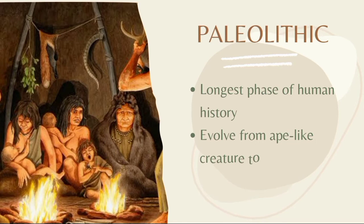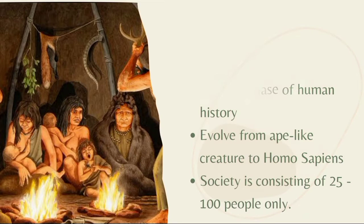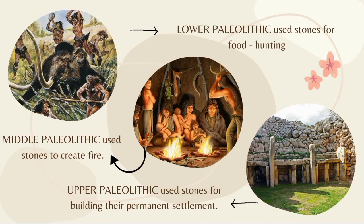Going back to the Paleolithic period, the Paleolithic period is known as the longest phase of human history, and humans were described to evolve from ape-like creatures to Homo sapiens. They were nomadic and hunter-gatherers, and usually their society consisted of 25 to 100 people only. It was also divided into three: Lower Paleolithic, Middle Paleolithic, and Upper Paleolithic period, where in each period there were some clear traces of advancement and development.